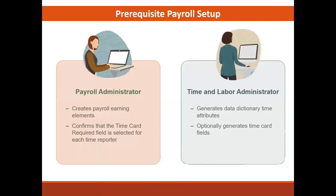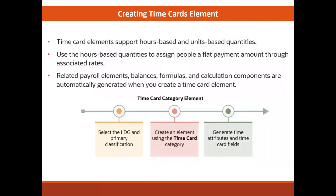We generate a time attribute for the data dictionary and can generate time card fields if needed. Elements can be set up as hour-based or unit-based in time and labor. An example of a unit-based element might be for piece work, where a person is paid based on the number of units produced. More often, time and labor elements are hours-based. If we deliver the time attribute for element payroll time type, the process to create additional time card elements associates those elements with an LDG and the time card category, and the process automatically generates related payroll element formulas and calculation components.